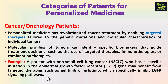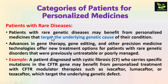By understanding the tumor's characteristics, we can tailor the medication. Next are patients with rare diseases, who may benefit by targeting the underlying genetic cause of their condition. Advances in gene therapy, gene editing, and other precision medicine technologies offer new treatment options for patients with rare genetic disorders that were previously untreatable or poorly managed. For example, a patient diagnosed with cystic fibrosis who carries specific mutations in the CFTR gene can benefit from personalized treatment with CFTR modulator therapies like ivacaftor, lumacaftor, or tezacaftor, which target the underlying genetic defect.